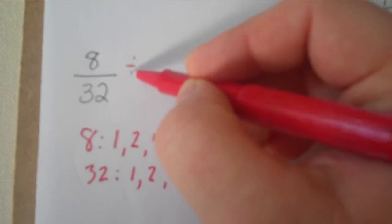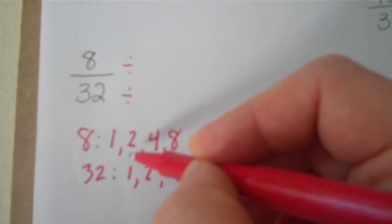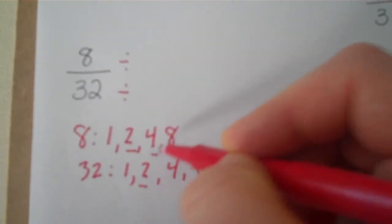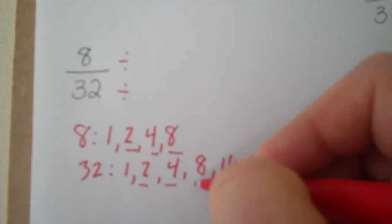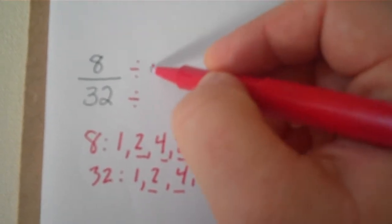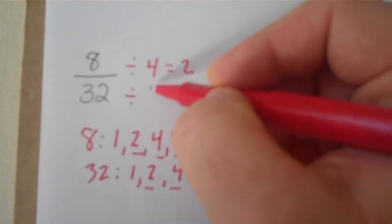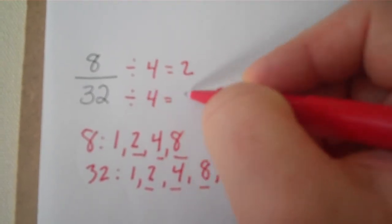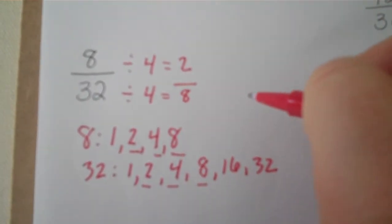I pick 4. It doesn't matter very much. I could divide by 2, or 4, or 8. 8 divided by 4 is 2. 32 divided by 4 is 8. So, I'm left with 2 eighths.